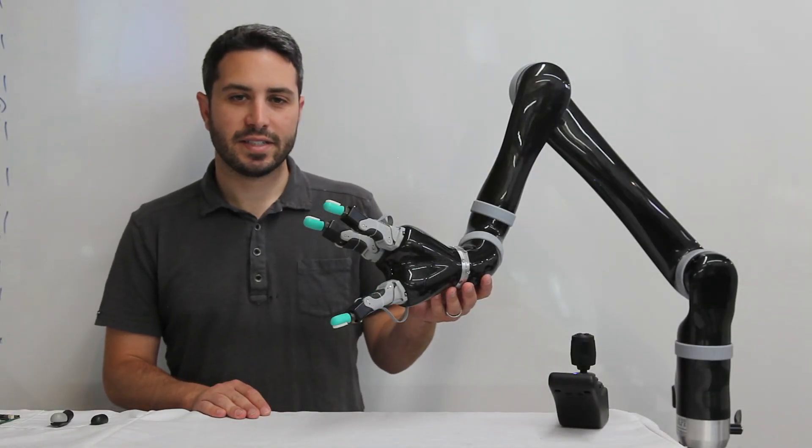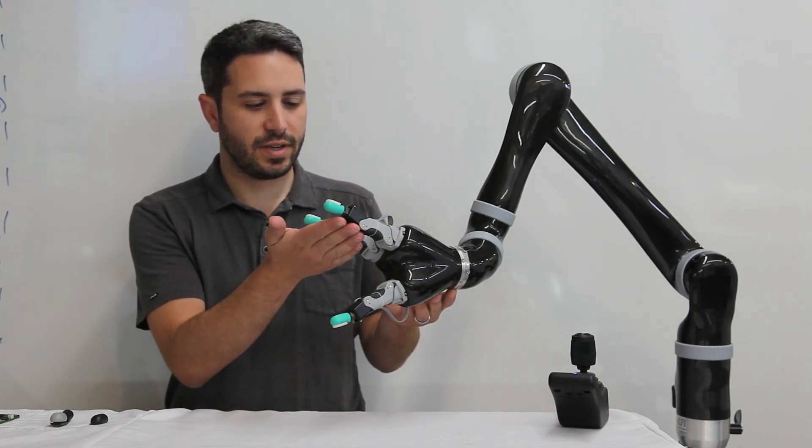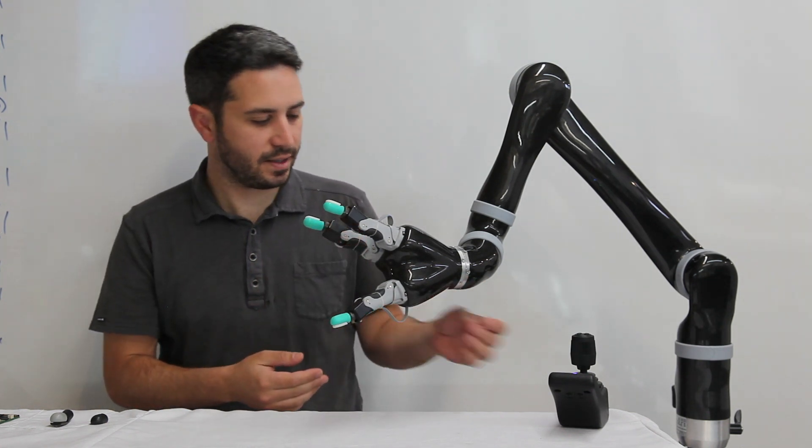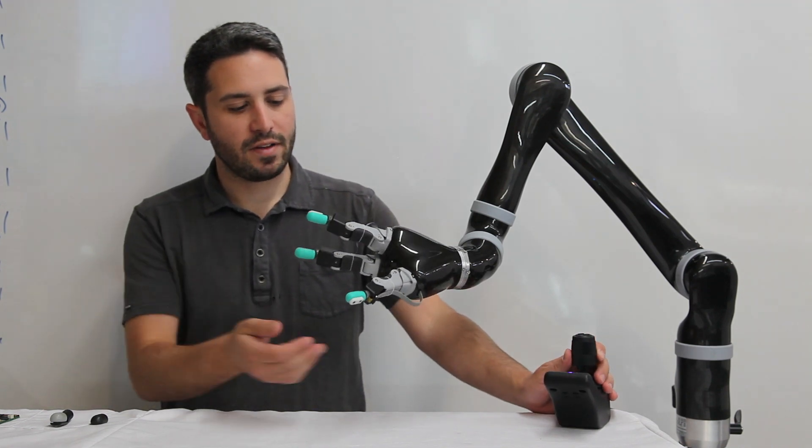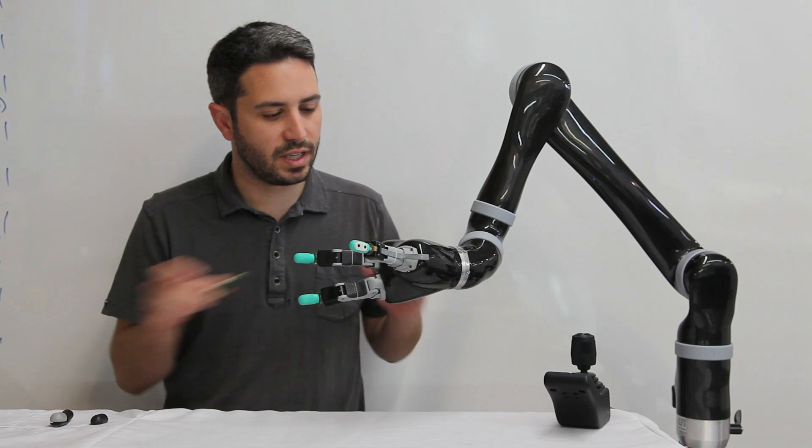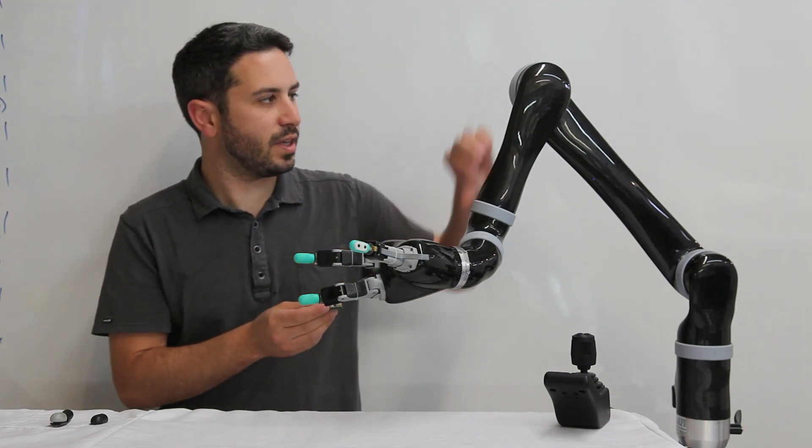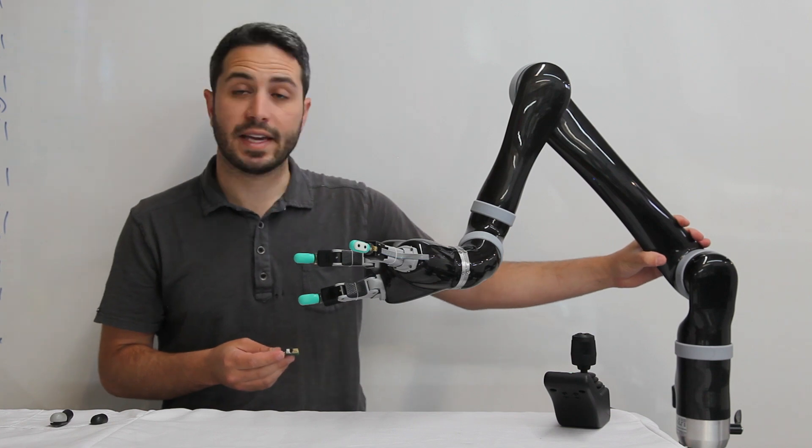So this is the Syntouch BioTac system for Jayco. It has three of our BioTac sensors located into the fingertips of the hand. We have all the wiring run from BioTac to inside the hand where there's an electronics board that collects the data and transmits it through the internal wiring via CAN bus.